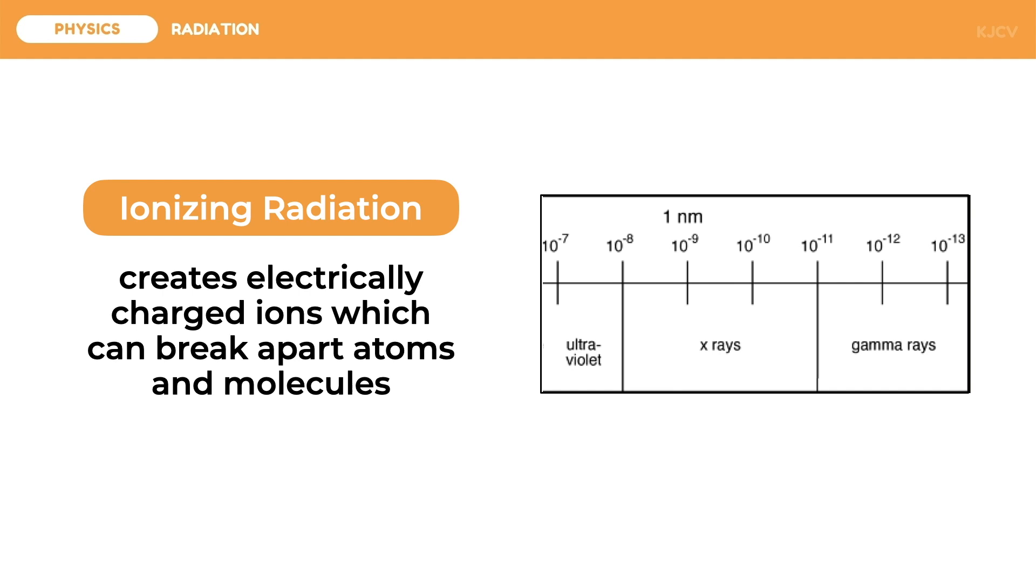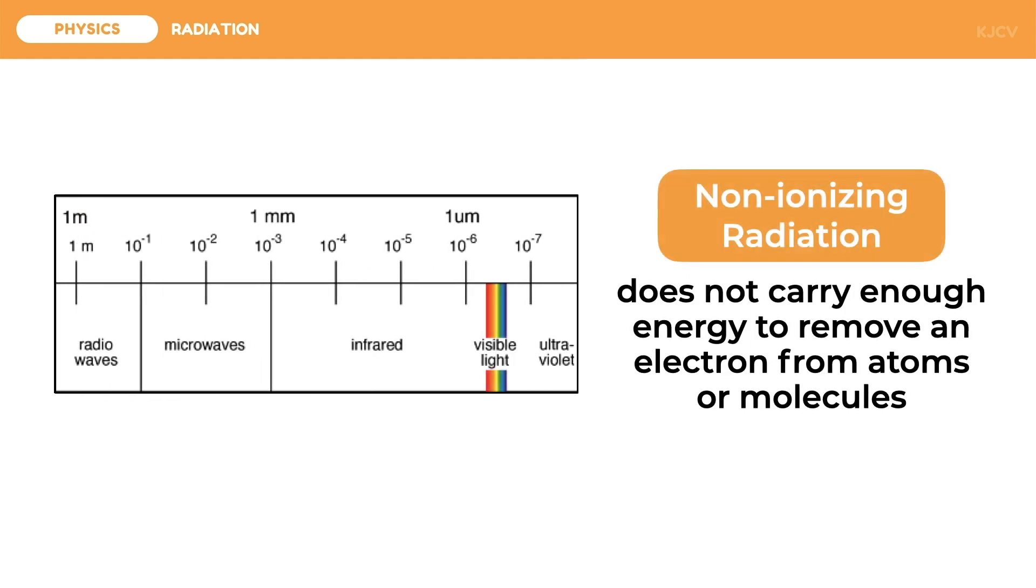High energy waves are ionizing, which creates electrically charged ions which can break apart atoms and molecules, especially of organisms. On the opposite side of the spectrum, we have the low frequency waves. For radio waves, microwaves, infrared, visible light, and lower frequency ultraviolet rays, energy is not enough to remove an electron from atoms or molecules.